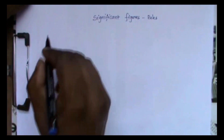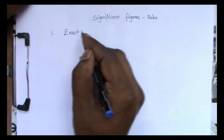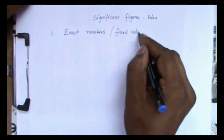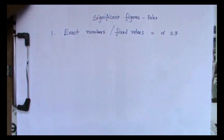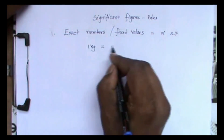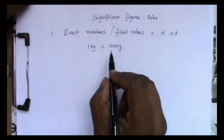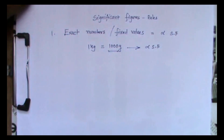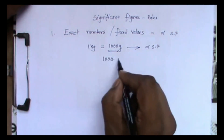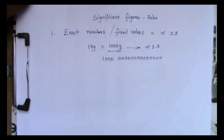Now we are going to discuss a few rules to find out the significant figures. The first rule: exact numbers and fixed values have infinity significant figures. For example, 1 kg is equal to 1000 grams. This 1000 grams has infinitely many significant figures because it is a fixed value — exactly 1000 grams. Similarly, if in your class there are 25 students, that is a fixed exact number, so it also has infinity significant figures.